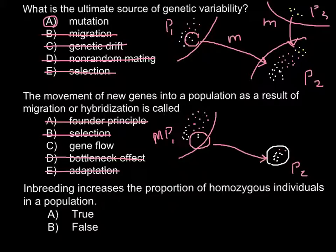The last question is a true-false statement: inbreeding increases the proportion of homozygous individuals in a population. The correct answer is true. With each round of inbreeding, we have a reduction of heterozygosity by 50 percent, meaning an increase of 50 percent in homozygous loci. After around 10 rounds of inbreeding, almost 100 percent of loci would be in a homozygous state.